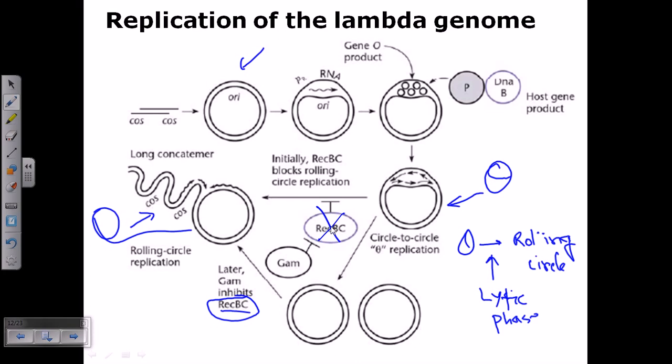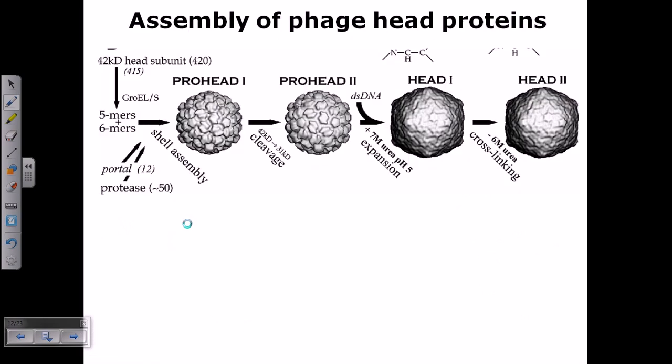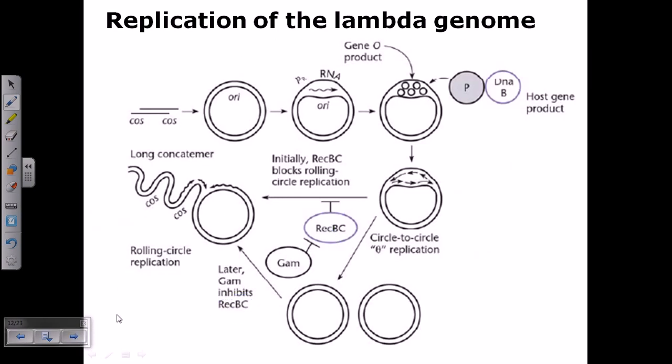the REC-BC is getting blocked by GAM, it can convert itself into the rolling circle mode. So rolling circle mode of replication goes on, and as it is going on, it is providing and creating more and more copies of the same gene.